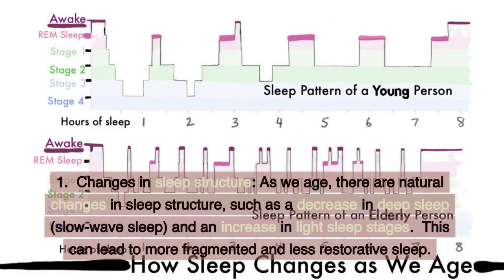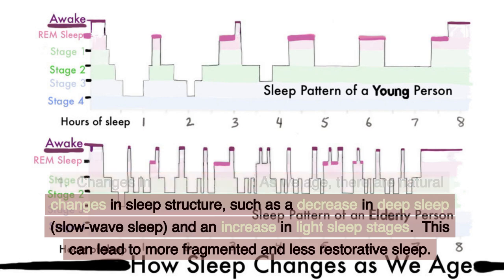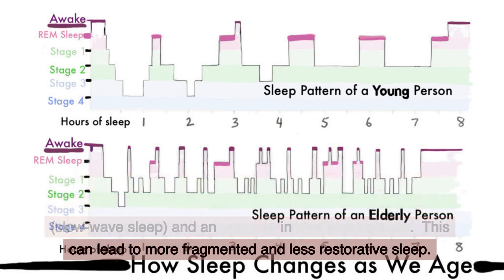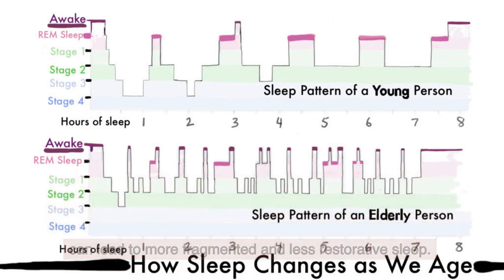Some common factors that can interfere with sleep in older adults include: 1. Changes in sleep structure. As we age, there are natural changes in sleep structure, such as a decrease in deep sleep, slow-wave sleep, and an increase in light sleep stages. This can lead to more fragmented and less restorative sleep.